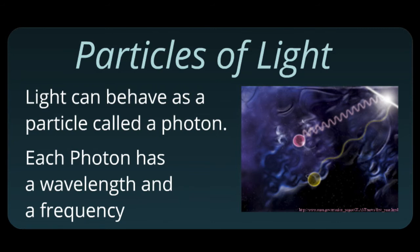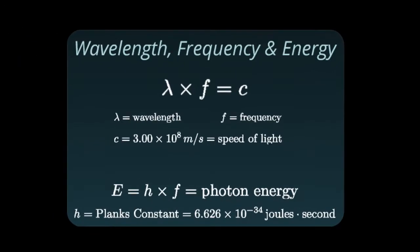Light can also act like a particle. These particles of light we call photons. Each photon has its own wavelength and its own frequency, so they still exhibit wave-like properties. We can talk about the frequency of a single photon. If I take the wavelength and the frequency and multiply them together, I get the speed of light. If I take Planck's constant h times the frequency, that tells me how much energy is in each photon.